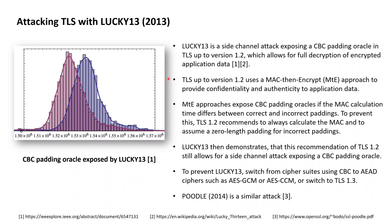From the essentials of cryptography chapter earlier in this course, we know that the preferred authenticated encryption approach is actually the so-called encrypt-then-MAC approach. Back in that chapter, I didn't provide an argument as to why encrypt-then-MAC is the preferred approach, but the argument for this is pretty much provided by the Lucky 13 attack.